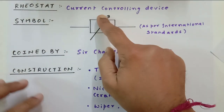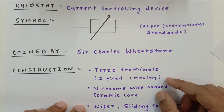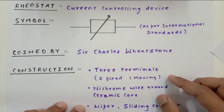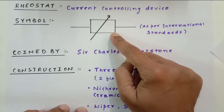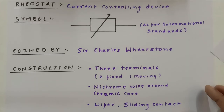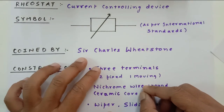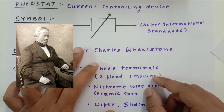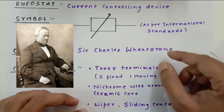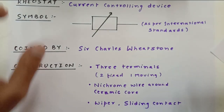Rheostat is a variable resistor and it is used to vary the current in the circuit, so it is also called a current controlling device. As per international standards, this is the symbol of the rheostat. You might have heard the name of the English scientist Wheatstone if you are in grade 12 — Wheatstone bridge is a very famous experiment performed in grade 12. Now let us look at the construction.